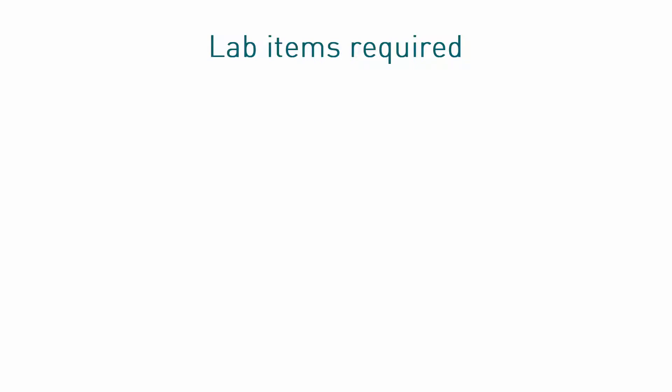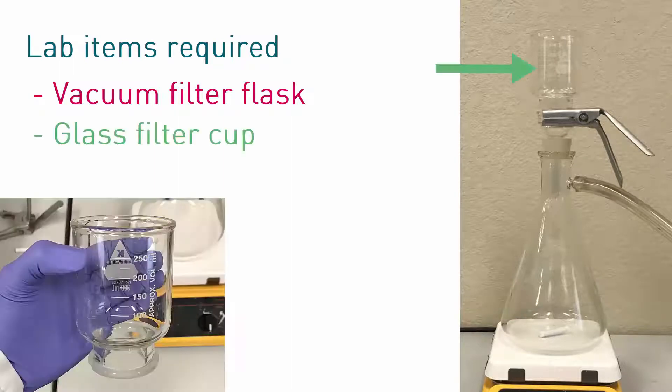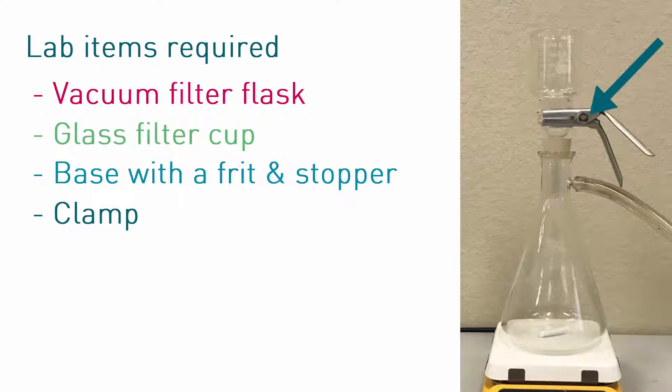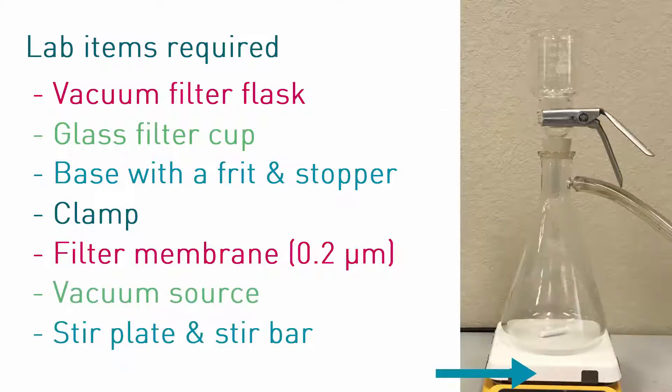The lab items necessary for mobile phase preparation consist of a vacuum filtration setup, including a vacuum filter flask, often with a capacity of 2 liters or greater, a glass filter cup and base with a frit and stopper to fit in the neck of the flask, a clamp to hold the filter cup assembly in place, a filter membrane with pore size of 0.2 microns, a vacuum source, a stir plate, and a large stir bar.